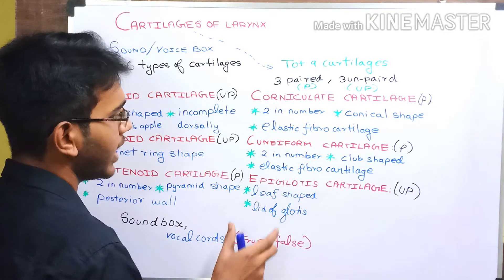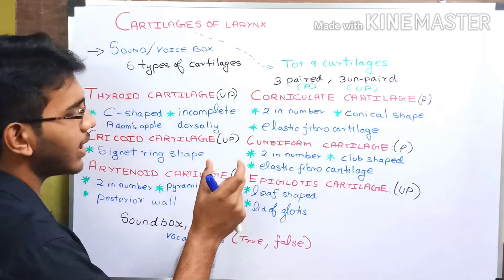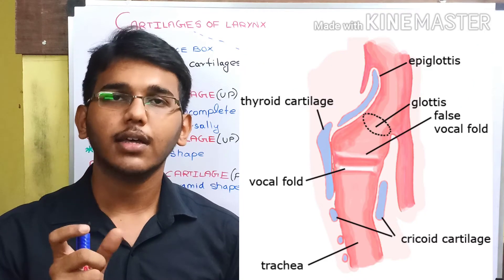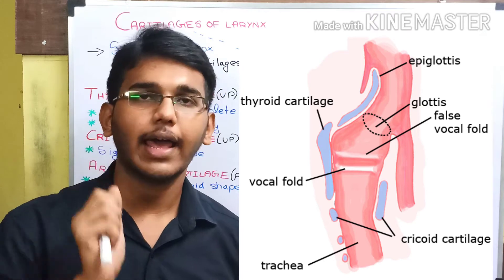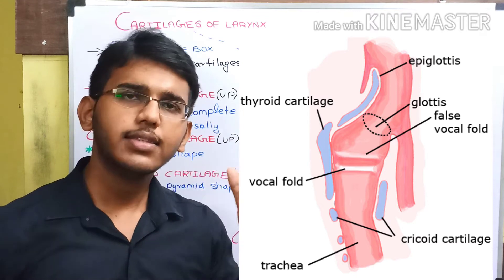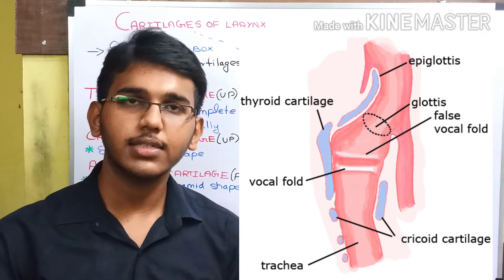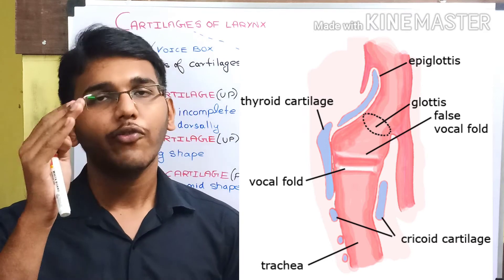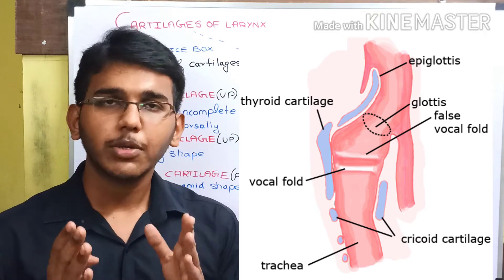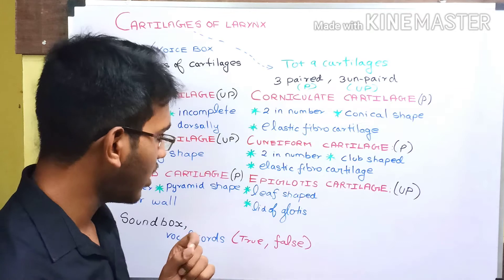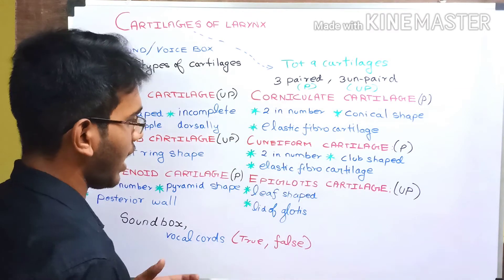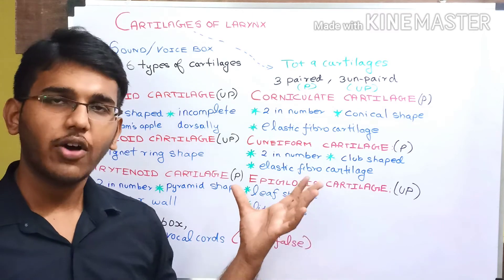Next, we have the epiglottis cartilage. It is a leaf-shaped cartilage and acts as the lid of the glottis. The glottis is the opening at the upper part of the larynx that allows external air into the tracheal column. The epiglottis acts as a lid over the glottis, allowing only air to flow into the trachea and preventing food materials from entering the tracheal column. It is also made up of elastic fibrocartilage.